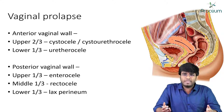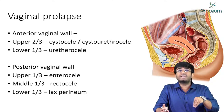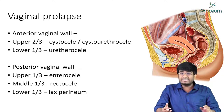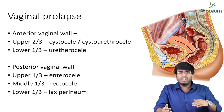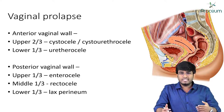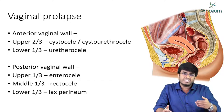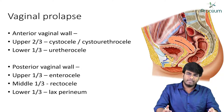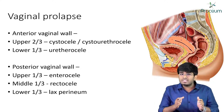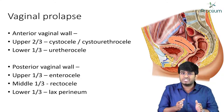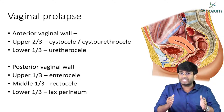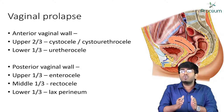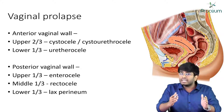Vaginal prolapse is just the same as uterine prolapse, where the vagina is protruding out of the introitus. Vaginal prolapse will also present with other conditions such as cystocele, urethrocele, and enterocele — because of the anatomical relationship of the vagina with the other surrounding structures, vaginal prolapse will be associated with other conditions also.